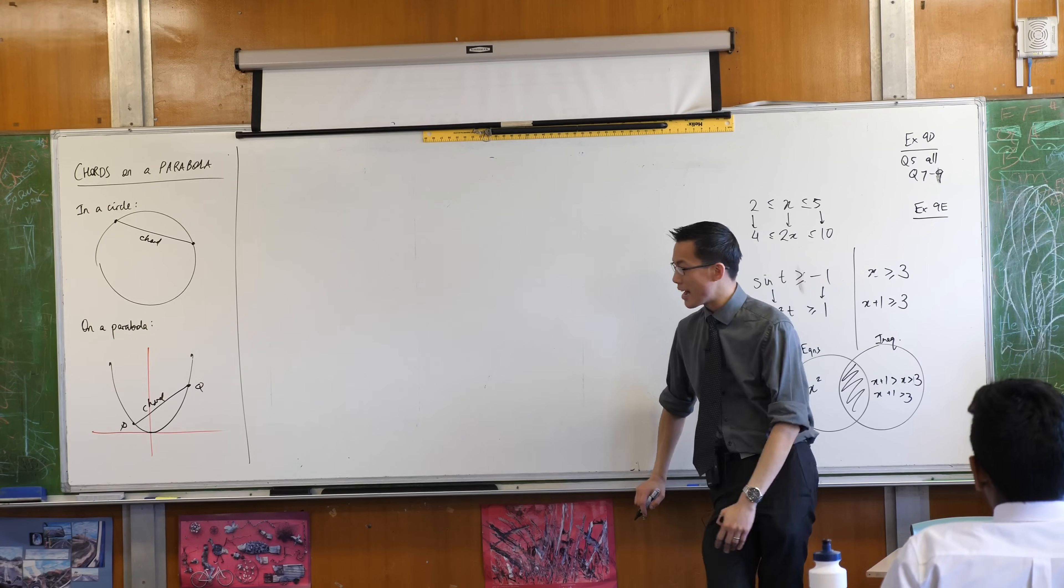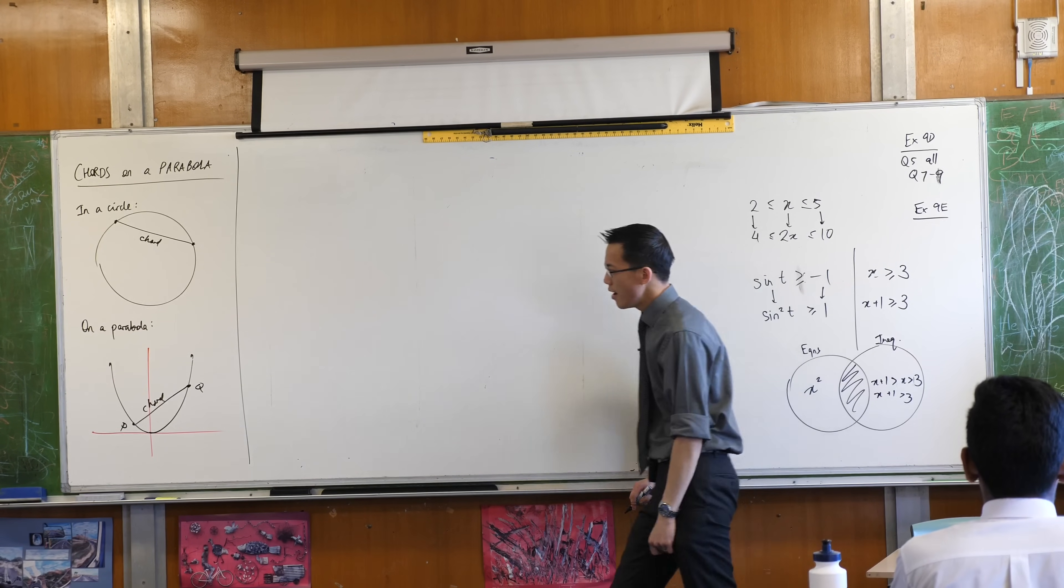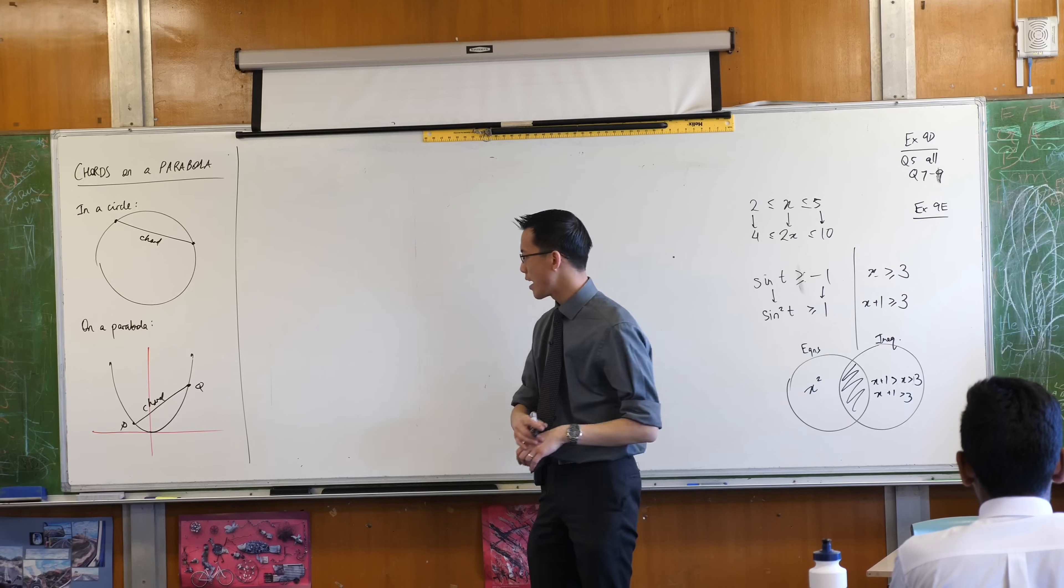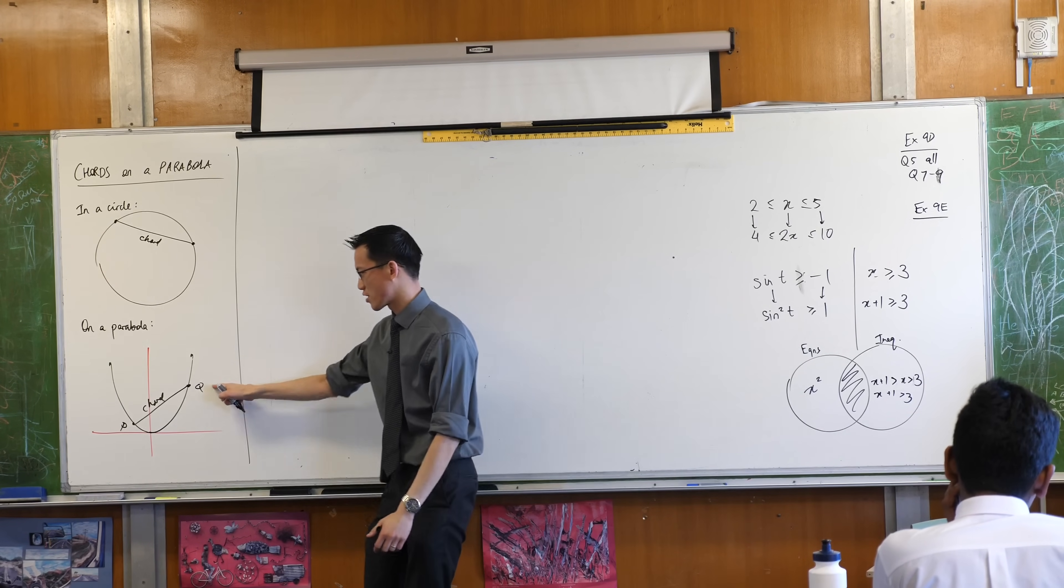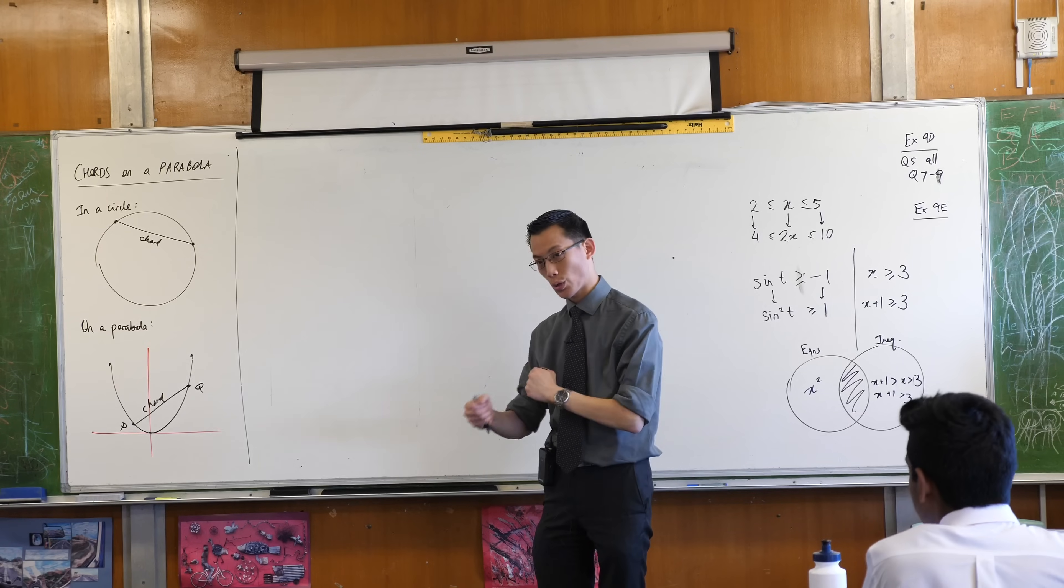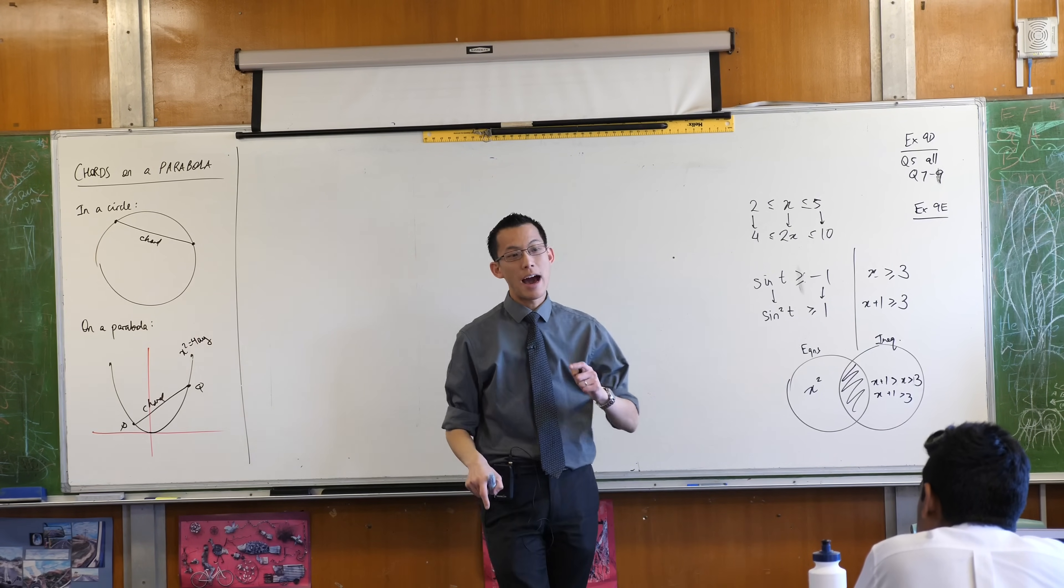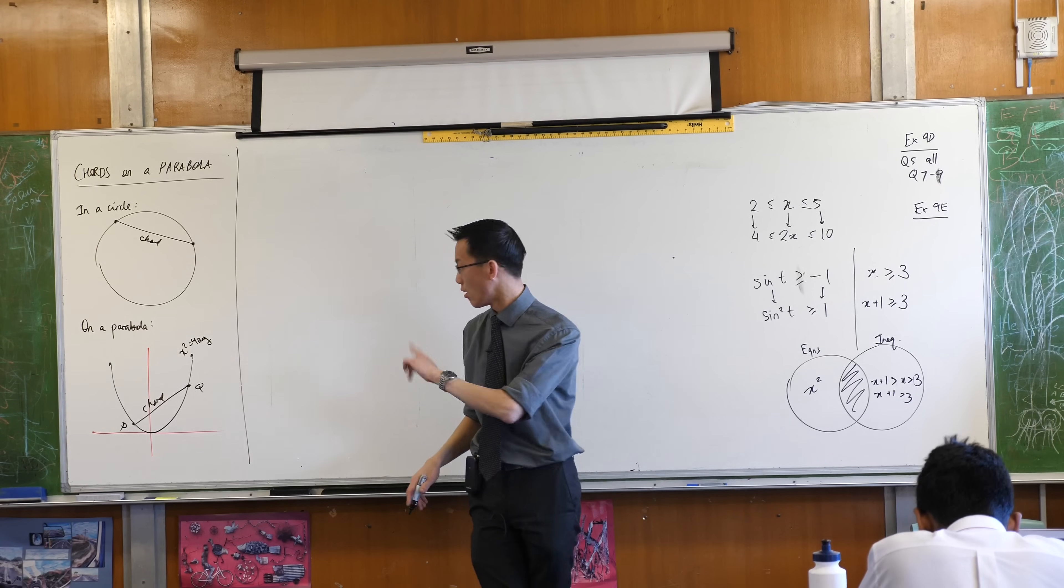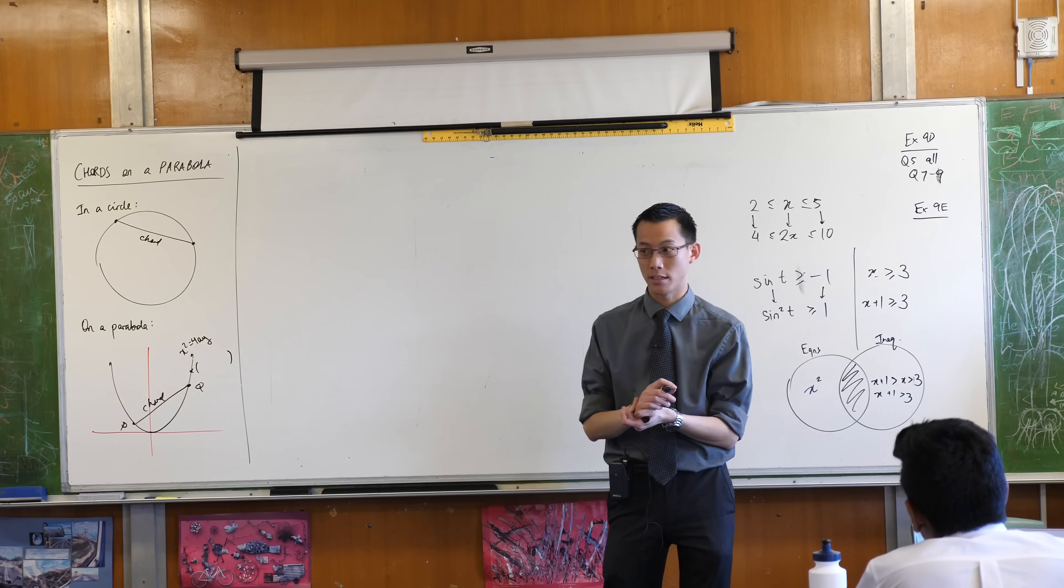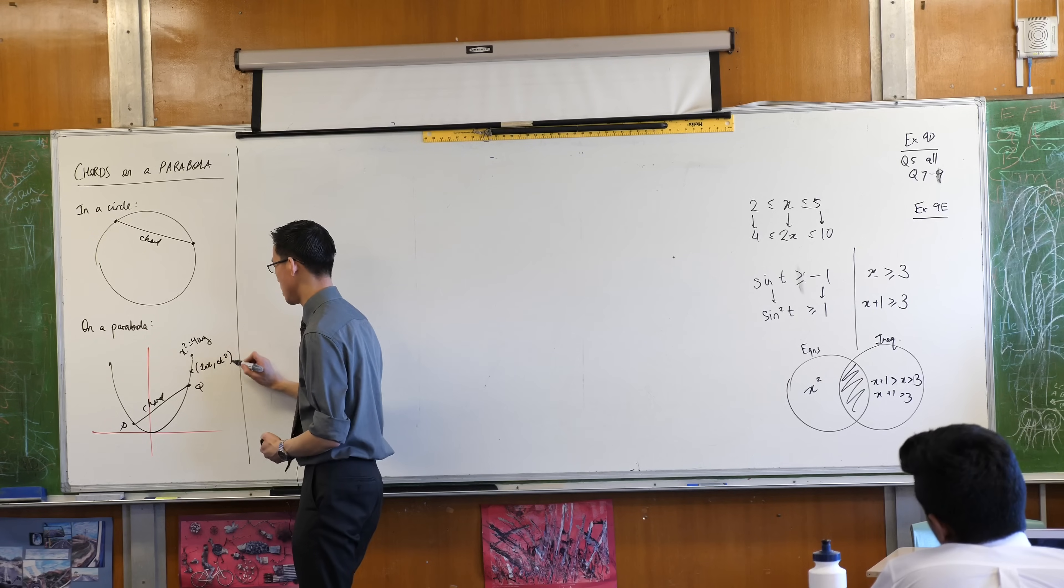Now then it becomes a natural question to ask, well what is the equation of said chord? When we have two points on the parabola I can now define them in terms of a single number, right? Before I would have had to know the x-coordinate, the y-coordinate, x-coordinate, y-coordinate and know them independently. But now I know them together. So if this is our regular locus definition of a parabola, right? Then I can say any point on the parabola is in the form, now do you remember, what were the parametric equations I gave you right at the beginning? 2at, at squared.